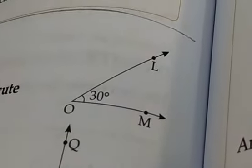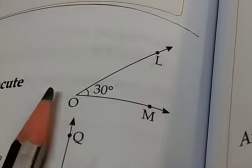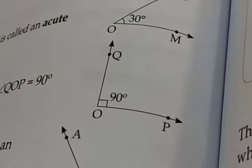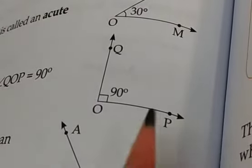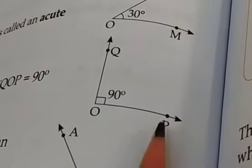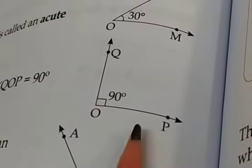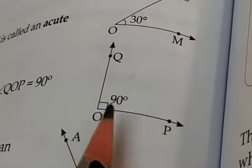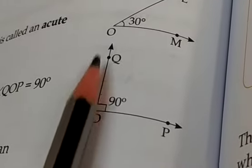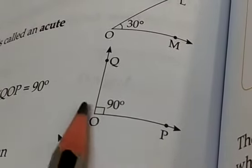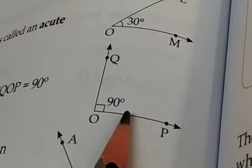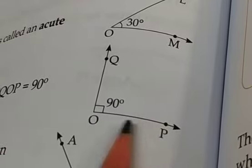Right angle — observe the figure here. An angle whose measure is exactly 90 degrees is called a right angle.